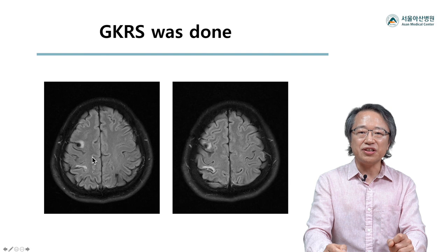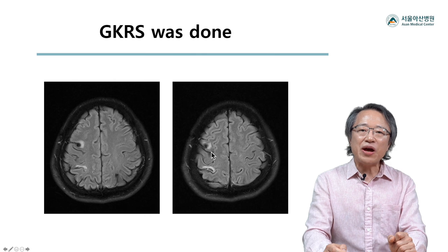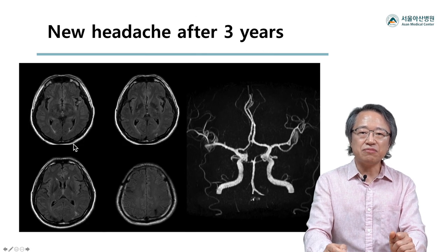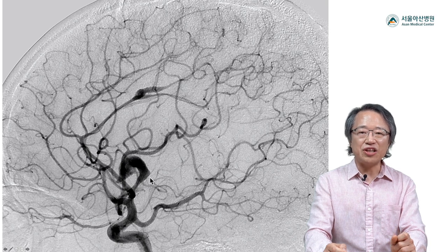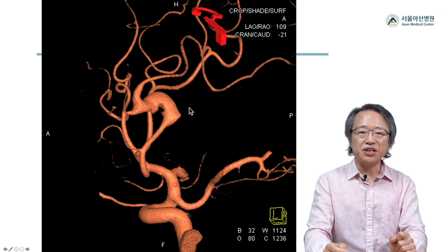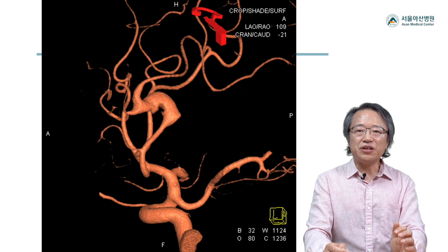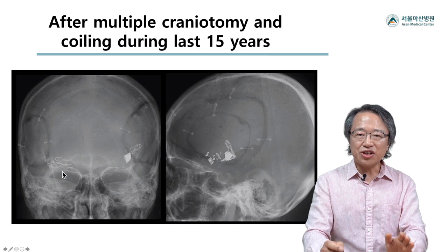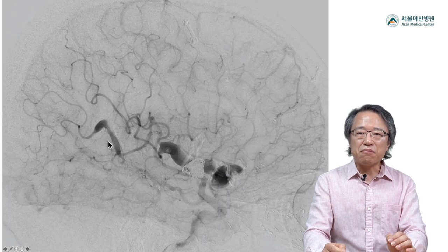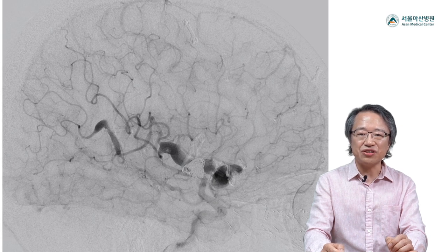We performed gamma knife radiosurgery and the follow-up imaging showed reduction of cortical edema. However, he presented with new headaches again, this time with multiple new lesions showing segmental irregular dilatations. DSA revealed full-blown myxomatous aneurysm lesions — 3D angiography showed ill-defined but segmental irregular dilatation of the middle segment of cortical arteries. We performed multiple craniotomies and coilings over the last 15 years. The patient is clinically stable even though his latest angiography shows much larger multi-segmental marked lesions.